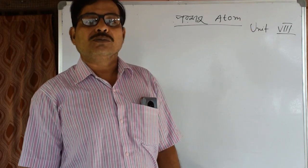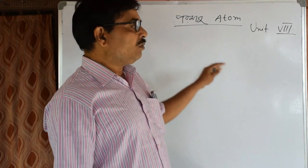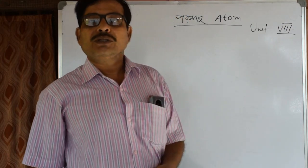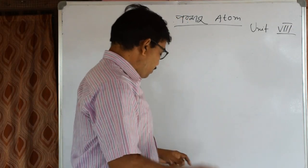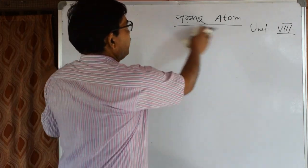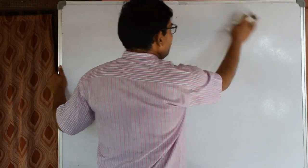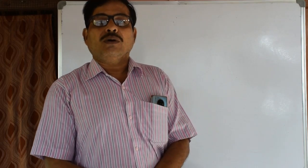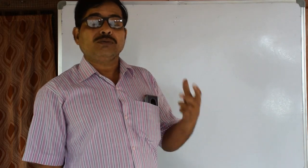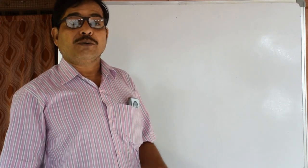This is the first atom and the second atom. We have noted that the second atom is the second atom. The first atomic model is J.J. Thomson, which is a watermelon model. This is the first part of the J.J. Thomson model.